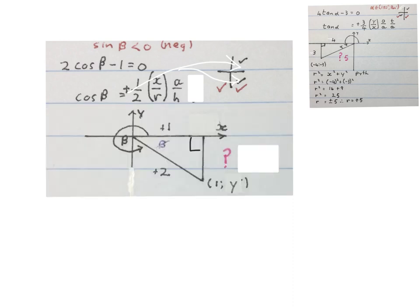Because cos beta is positive, it means we will be in the first or fourth quadrant. Then they said sine of this beta is smaller than zero, which means negative. And sine is negative in the third and fourth quadrant. That means we will work in the fourth quadrant.